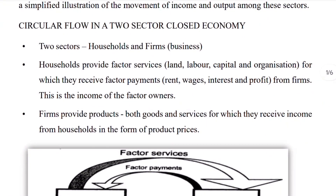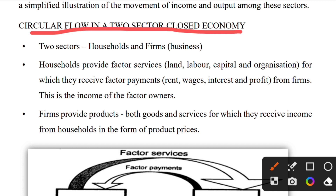Circular flow in a two-sector closed economy. In the closed economy, there is no foreign trade. The two sectors are the household and the firm. The household provides factor services — land, labor, capital, and organization — for which they receive factor payments: wages, interest, and profit from the firm. This is the income of the factor owners.